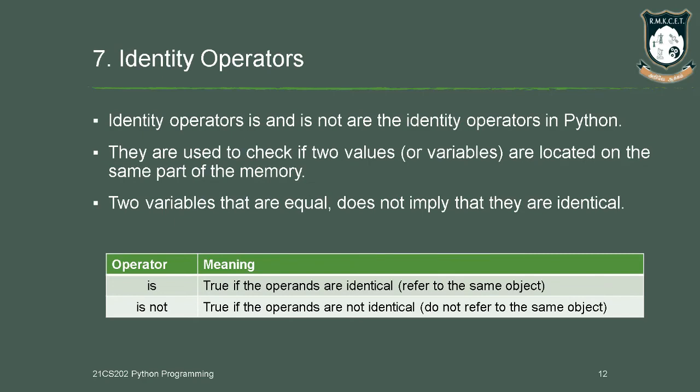Finally, the last operator is identity operator. Identity operator is used to find out the identical values or the identity of a particular operand present in the sequence. The operators are IS and IS NOT. It is used to check whether the operands are identical — that is, if they are same or not. If the operands are the same, IS returns true; if different, it returns false.